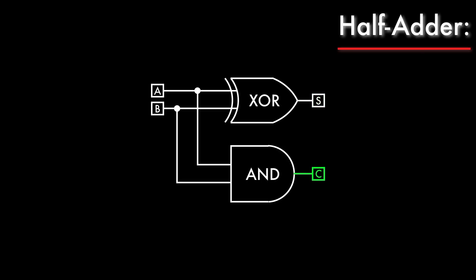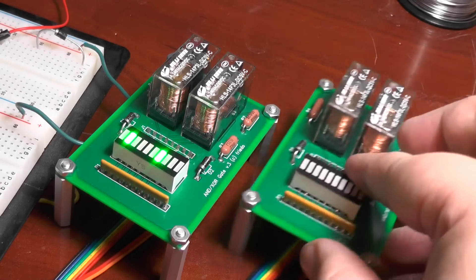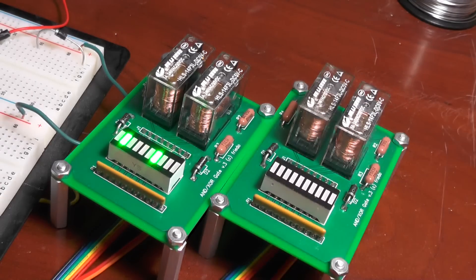Now this works great for adding 2 bits and finding out if we need to carry to the next column to the left, but it cannot handle the case of receiving a carry bit from the previous column to the right. To do that, we need to build a full adder, and as you might expect, that requires 2 half adders.